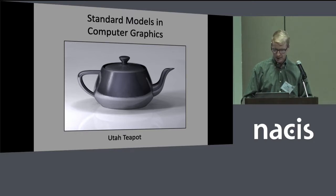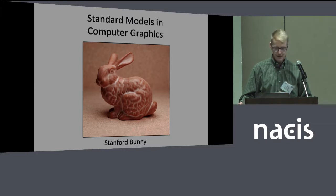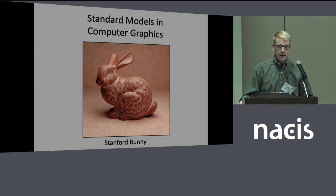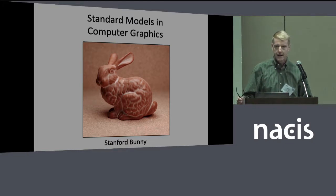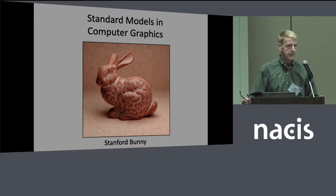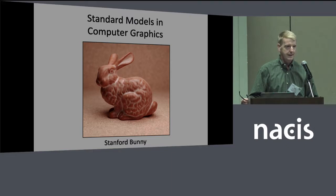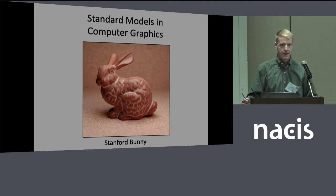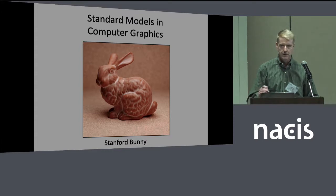Something closer to what we're looking at is another example from computer graphics — the Stanford Bunny, developed at Stanford University. This is actually a physical object that was scanned and then made into a three-dimensional TIN — a triangulated irregular network — of 69,000 triangles. People can apply different techniques to it and see how it looks. It was offered at four different resolutions so that people could get into fine detail or show it in a more general manner.